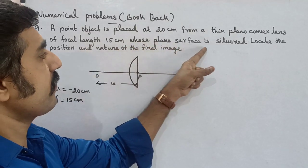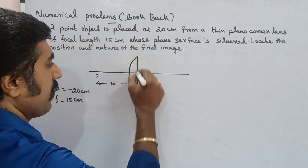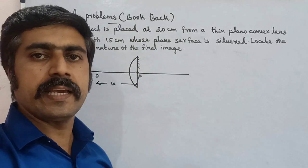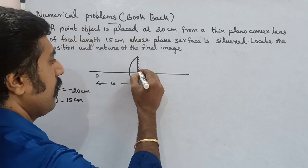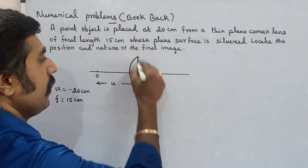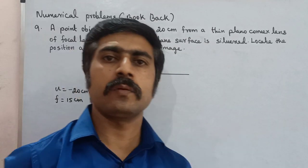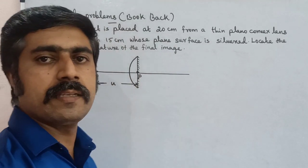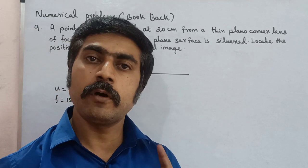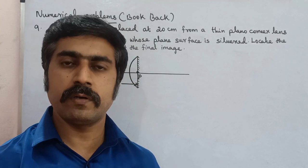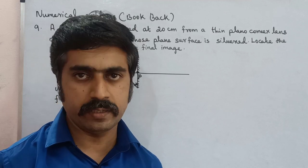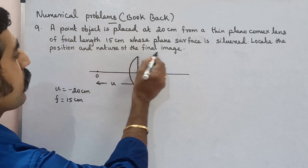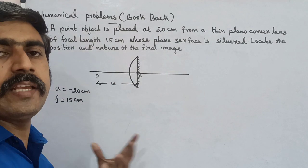The plane surface is silvered. A silvered surface acts as a mirror. So this silvered lens is a modified form of a mirror effect. We need to locate the position and nature of the final image.